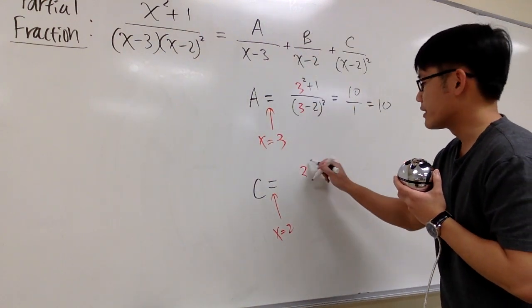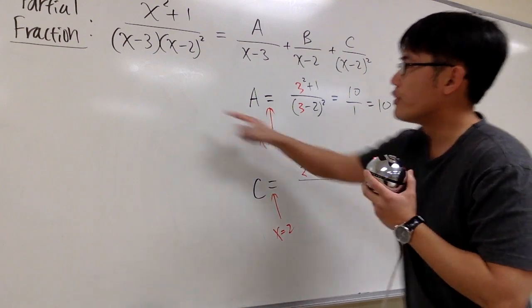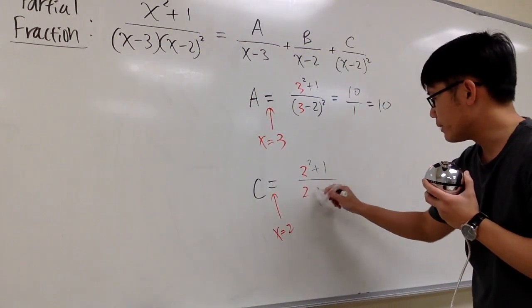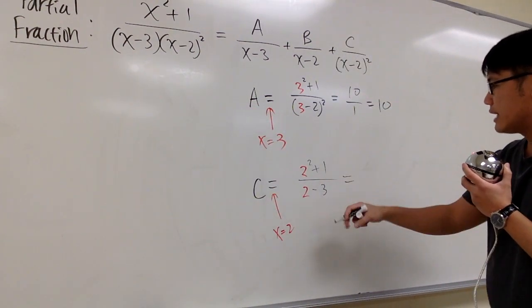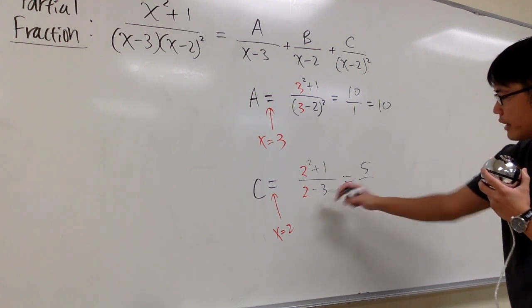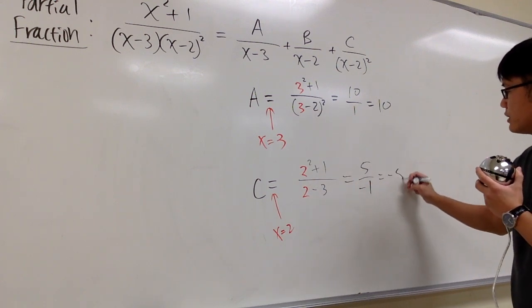So we will get 2 squared on the top plus 1, over plug in 2 in here, so 2 minus 3. Work this out, on the top you get 5, over on the bottom you get negative 1, which is negative 5.